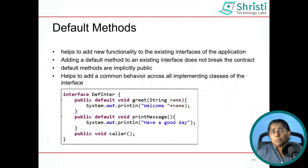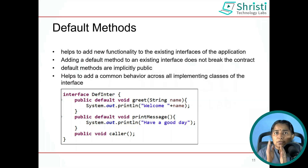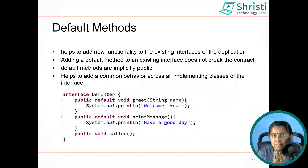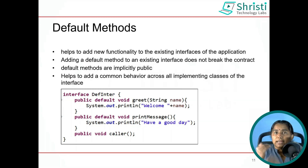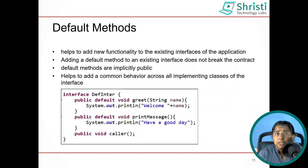First, let us understand about default methods. Default methods are used for adding new functionality to an existing interface, without breaking the contract. Before Java 8, if you had to add a new method to an existing interface, it was not possible — it would break the contract.